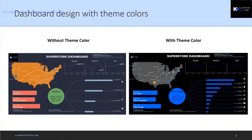The underlying theme color can also be derived not only from the brand, but from what the dashboard is trying to say. For example, a dashboard about water conservation might use blue to reflect water, blood donation might use red, or good and bad might use green and red respectively. All those things can be achieved with different colors.